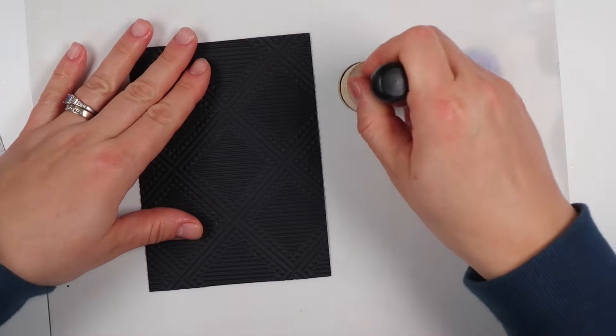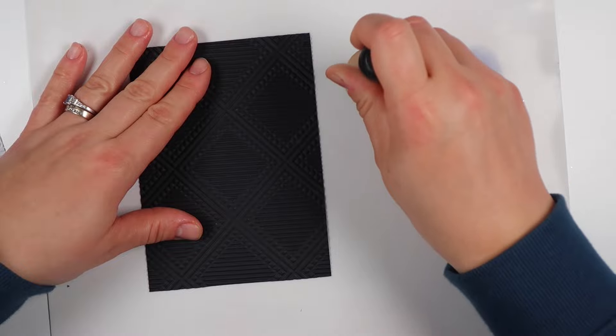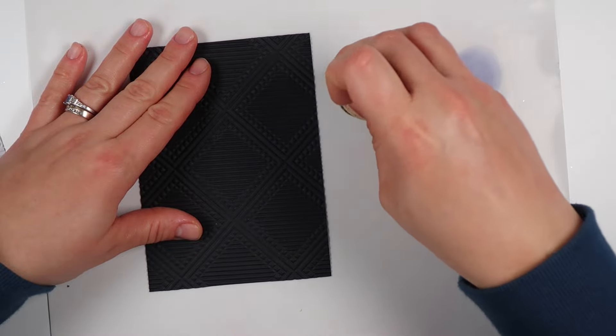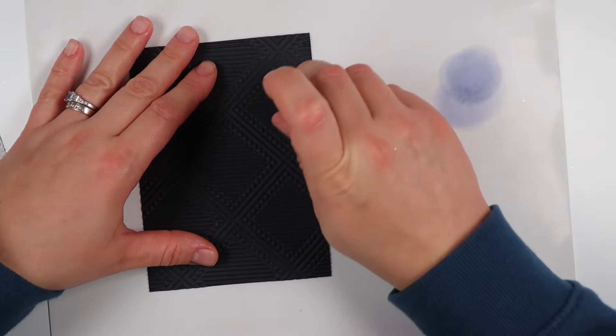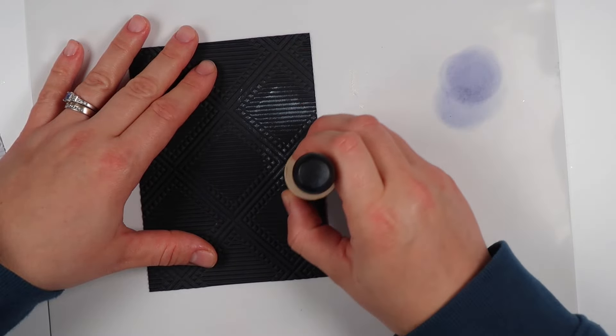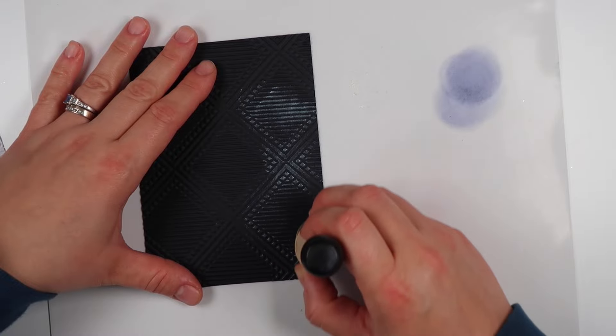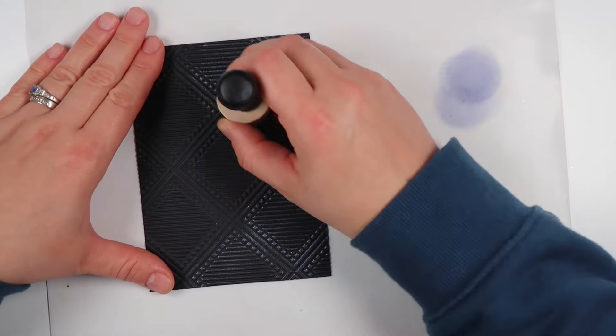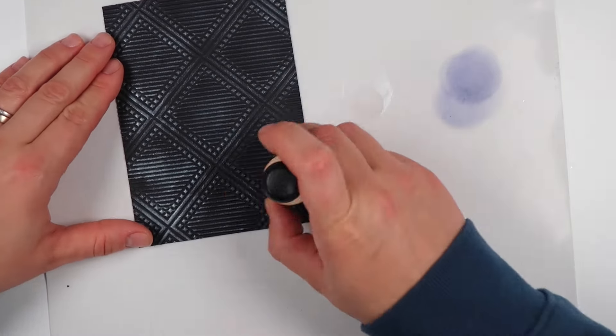You can also take oxide inks like the ones I was using in the previous shot and use them on dark cardstock—they will pop off as well. Again, I'm using a very light hand and gently rolling over the top in a circular motion on my embossed cardstock, and then you can start to really see that shine pop off the card.